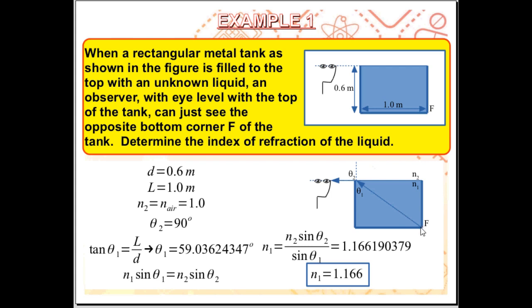Light from the bottom corner F travels towards the opposite corner, then goes from the liquid to the air. The light refracts and then reaches the eyes of the observer, allowing the observer to see the bottom corner F. Here we have refraction of light from one medium to the other — from the unknown liquid to the air. The unknown liquid is medium 1 and air is medium 2, so n2, the index of refraction of air, is 1.0.